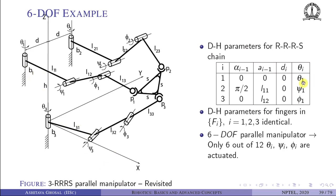Each finger has three joint angles: θ1, ψ1, φ1 for finger 1; θ2, ψ2, φ2 for finger 2; θ3, ψ3, φ3 for finger 3 — nine total. Since it's a six-DOF system, only six are actuated. We assume the first two joints of each finger are actuated (θ and ψ) and the third joint (φ) is passive for each finger.